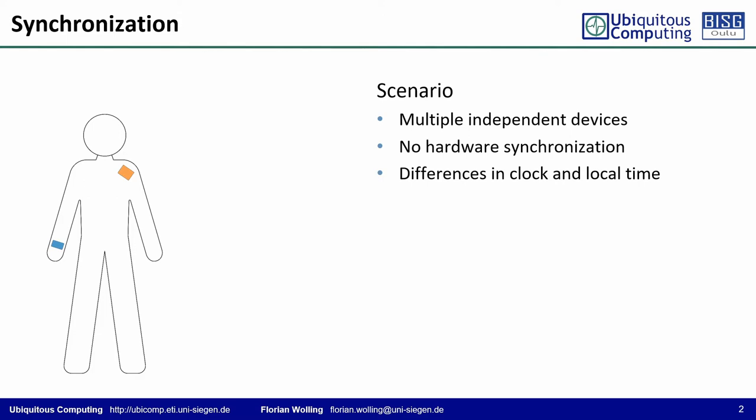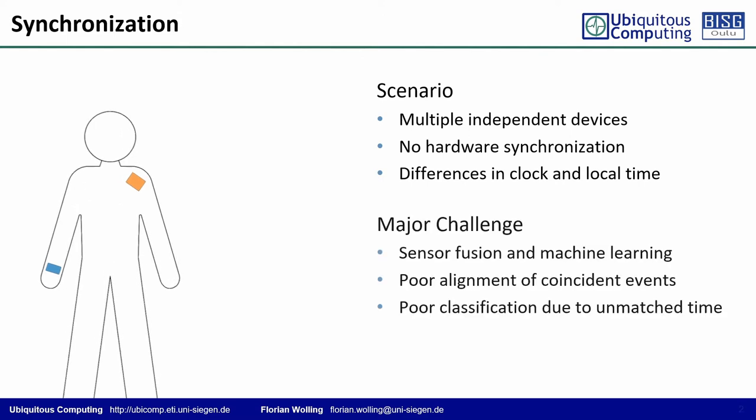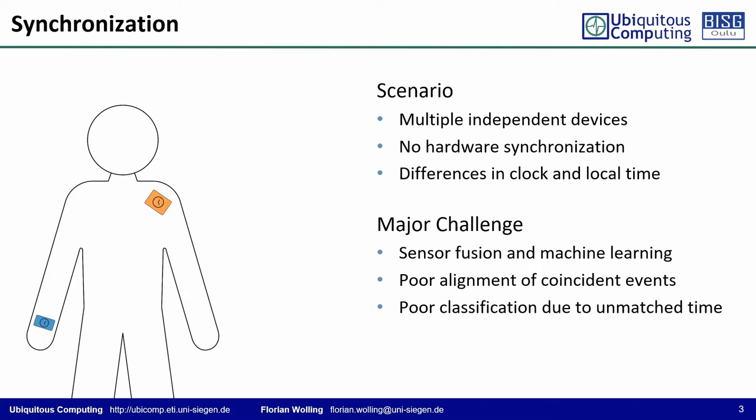Up to now, wearables are typically worn on the wrist and thus have a limited, location-specific perspective. A range of today's sensing tasks can however benefit from the use of multiple devices, each contributing insights into a local perspective which cannot always be covered by a solitary device. Because most off-the-shelf wearables do not support hardware synchronization, the independent devices show differences in their local clock and time. Consequently, the proper synchronization of distributed devices is still one major challenge, especially for sensor fusion and machine learning methods, which suffer from poor alignment of coincident events.